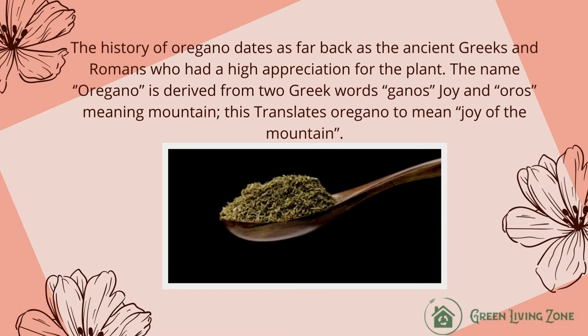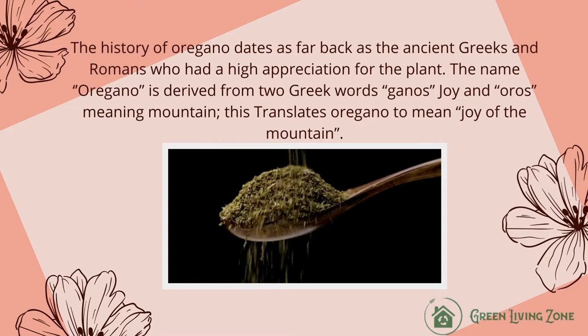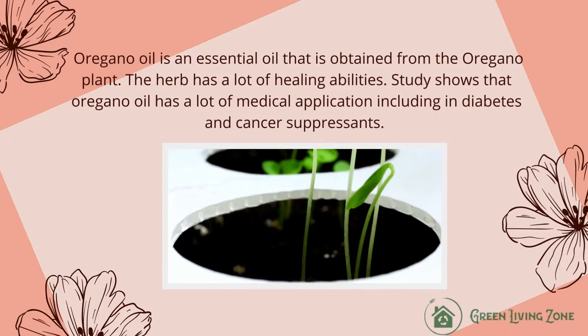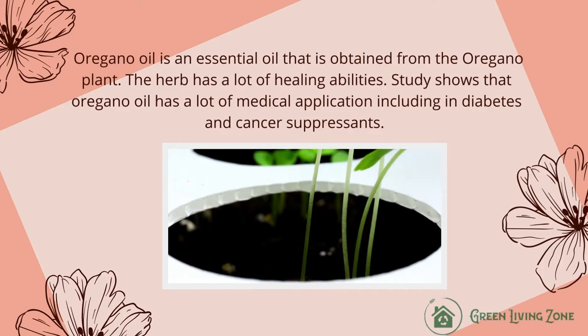The history of oregano dates as far back as the ancient Greeks and Romans, who had a high appreciation for the plant. The name oregano is derived from two Greek words: 'ganos' meaning joy and 'oris' meaning mountain, translating to 'joy of the mountain.' Oregano oil is an essential oil obtained from the oregano plant, and studies show it has many medical applications, including in diabetes and cancer suppression.